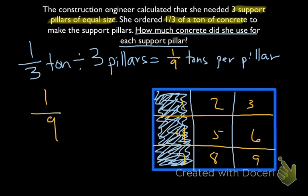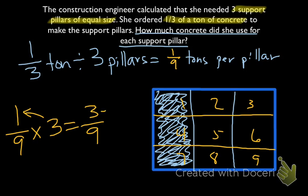Of course, the way we can check that is just use multiplication and check our answer again. So it's 1 ninth of a ton per pillar times three pillars. Three times one is three, we're left with nine. And we divide by three on top and bottom to get 1 third tons of concrete.